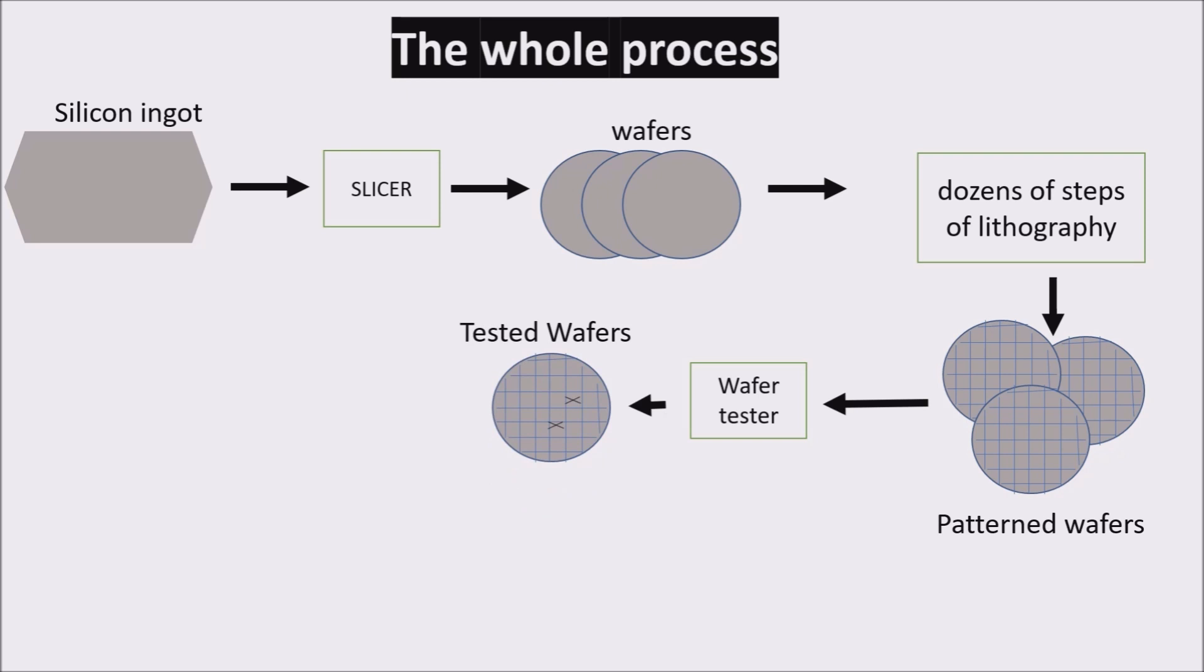These defects make it impossible to manufacture a perfect wafer. A simple way to cope with this imperfection is to place as many independent components as possible on a single wafer.